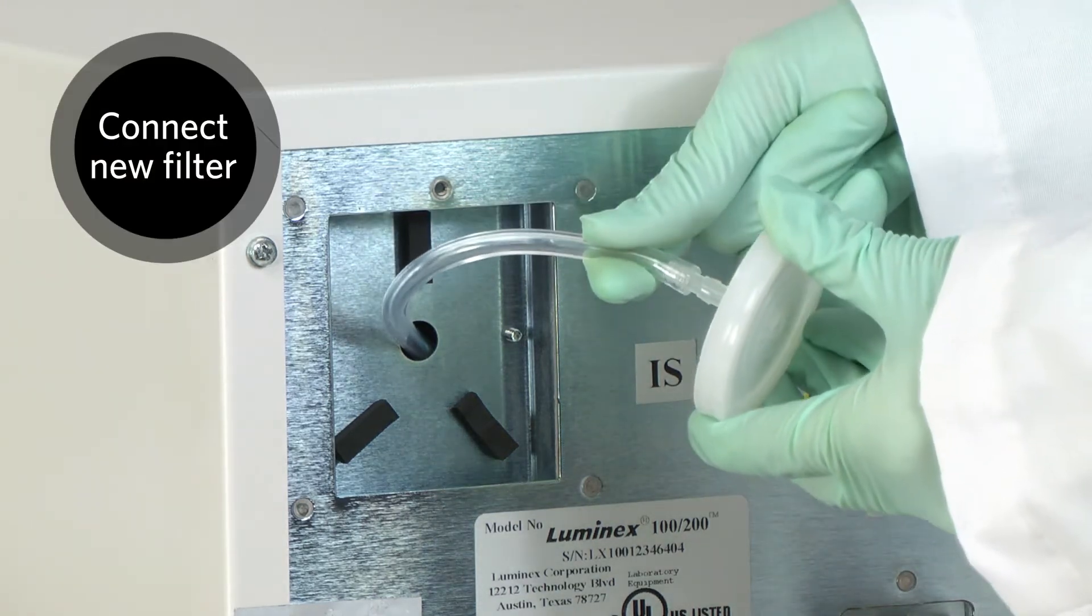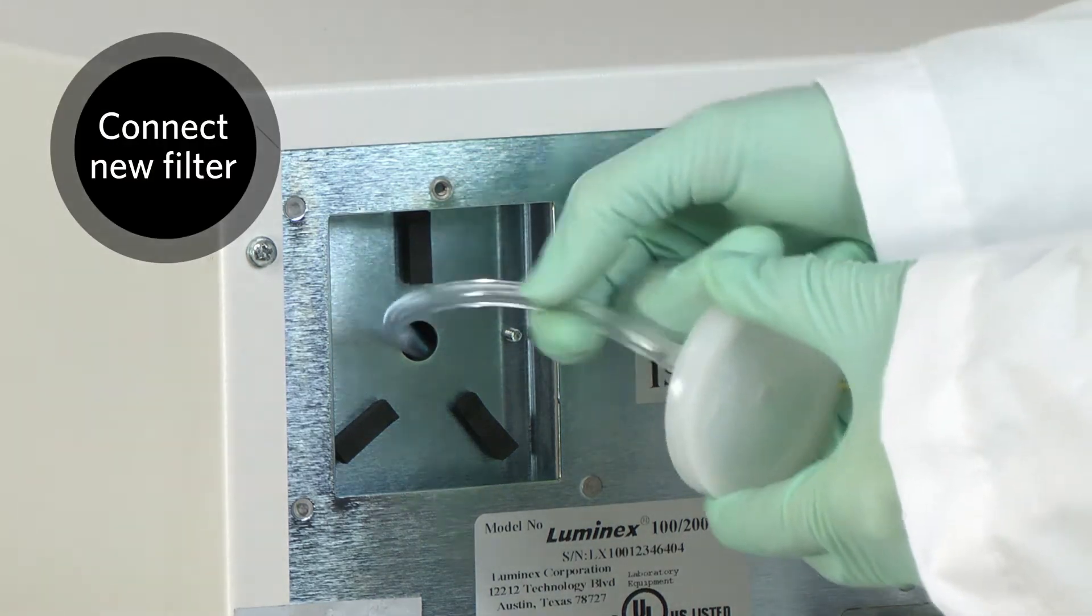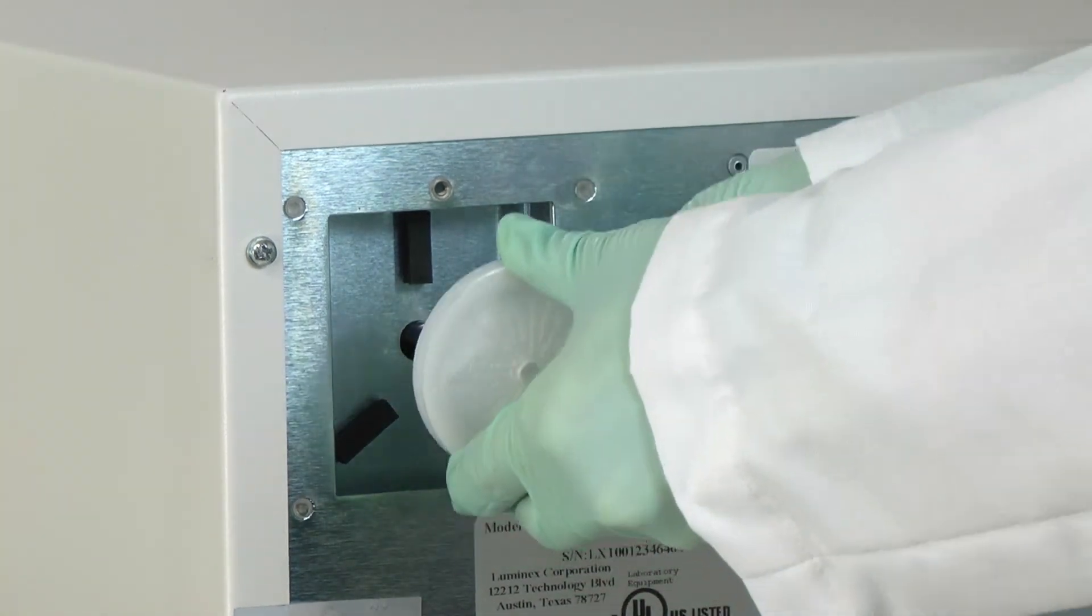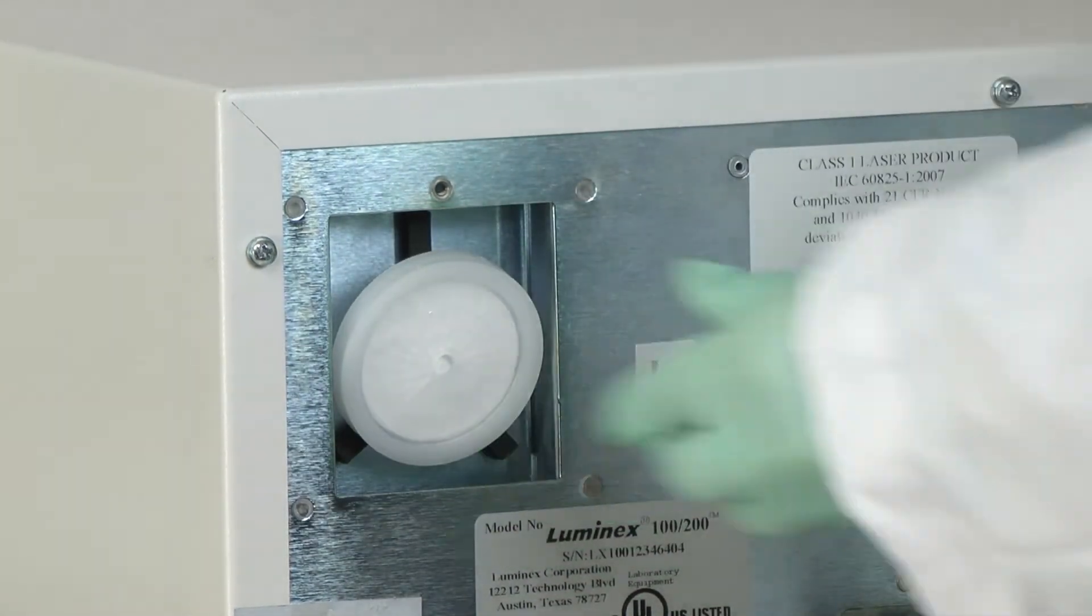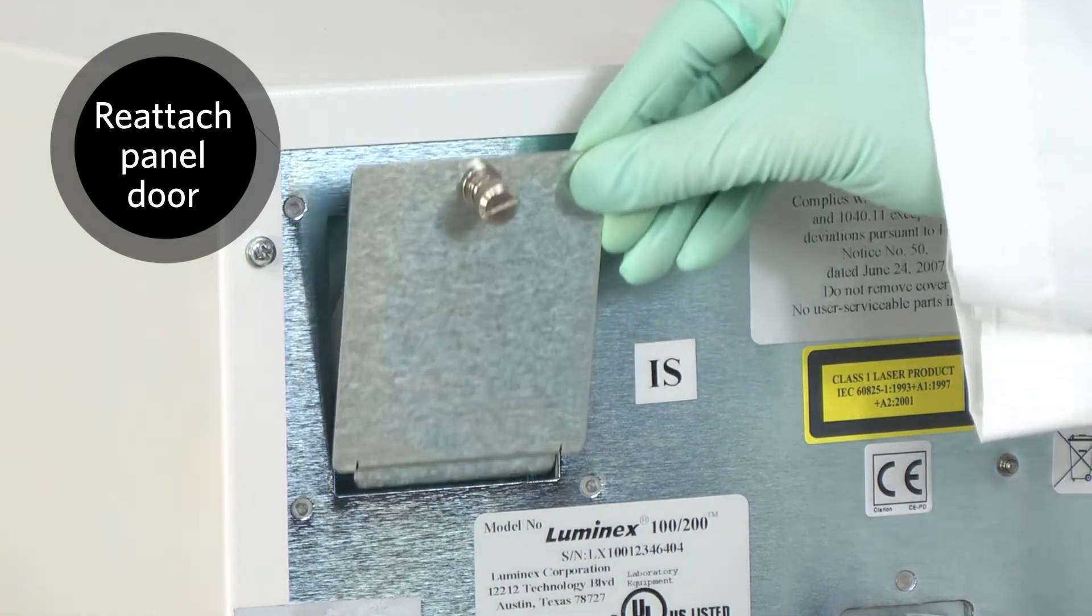Connect a new filter to the tubing and position the filter inside the panel. Reattach the panel door to the unit.